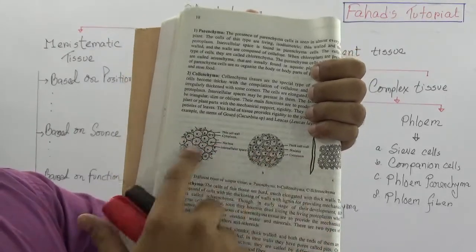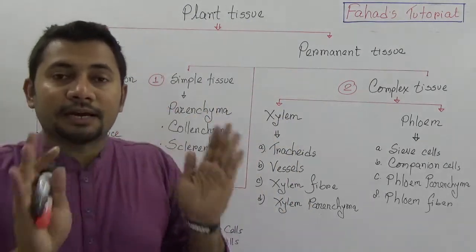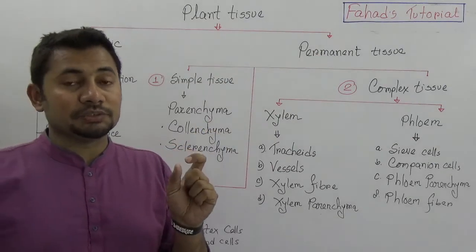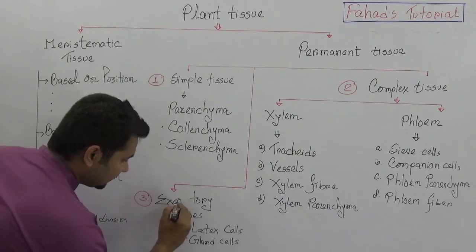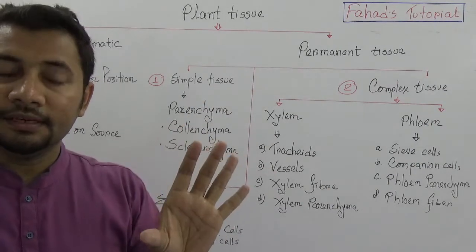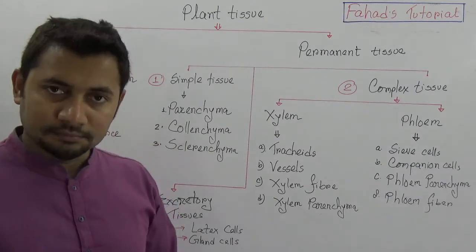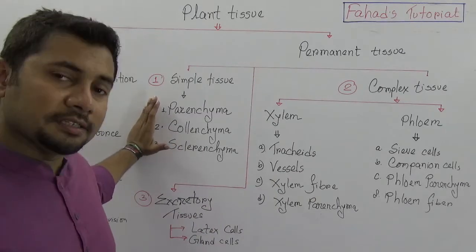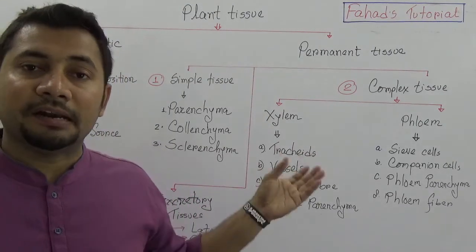I am planning to upload a series of classes based on these tissues. Right now I only describe what the types of tissues are. In the case of plant permanent tissues, simple tissues have three types: parenchyma, collenchyma, and sclerenchyma. I shall upload another video explaining these in detail, as there are specific lines and explanations that will come in the exam.